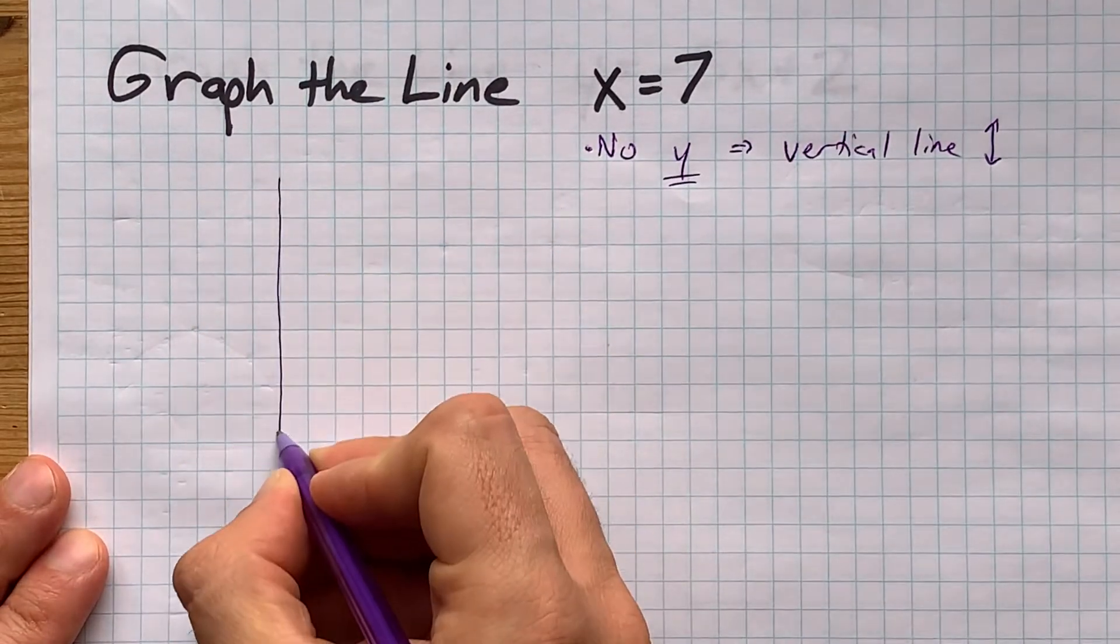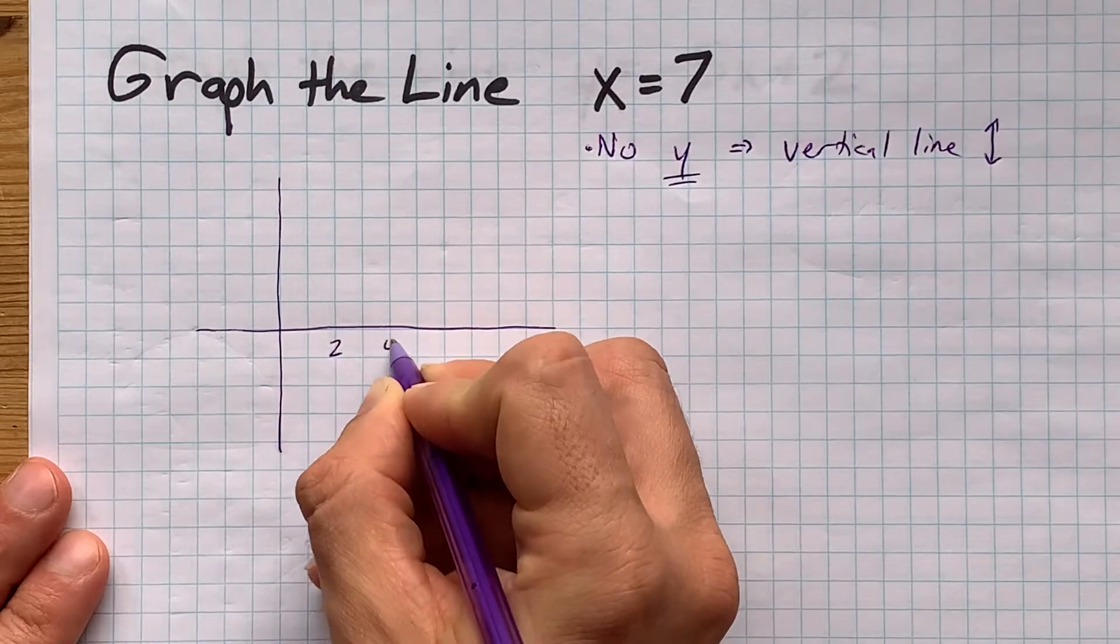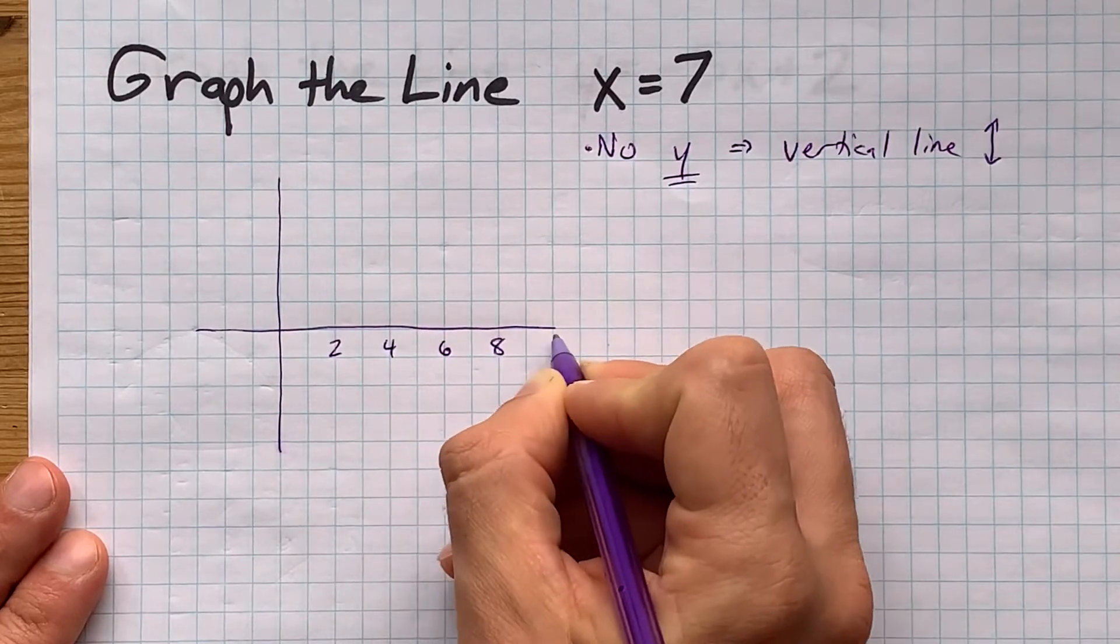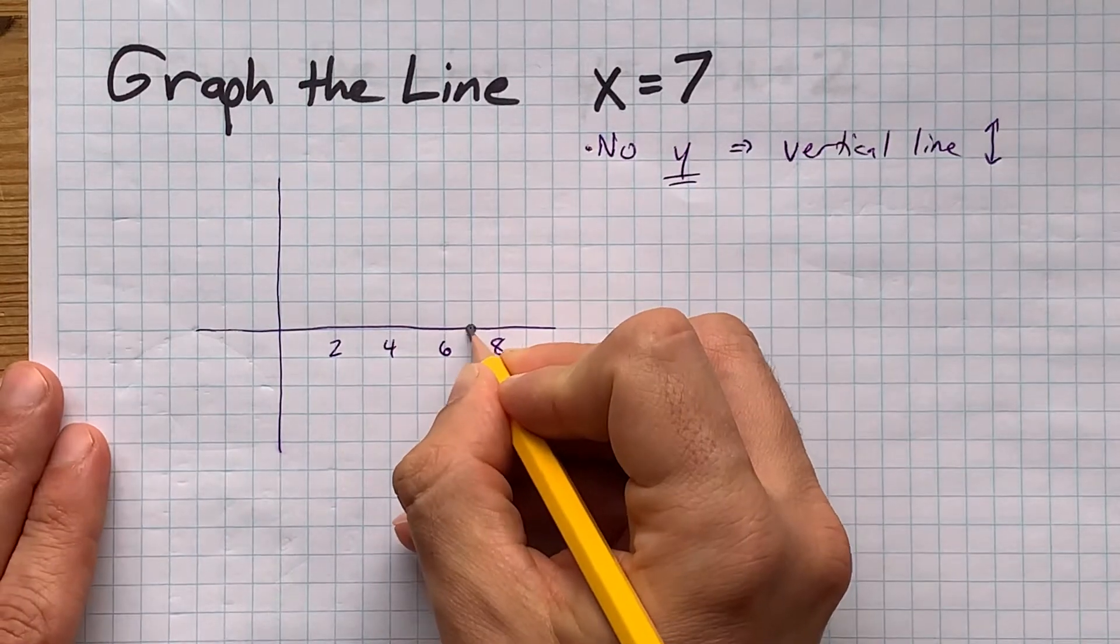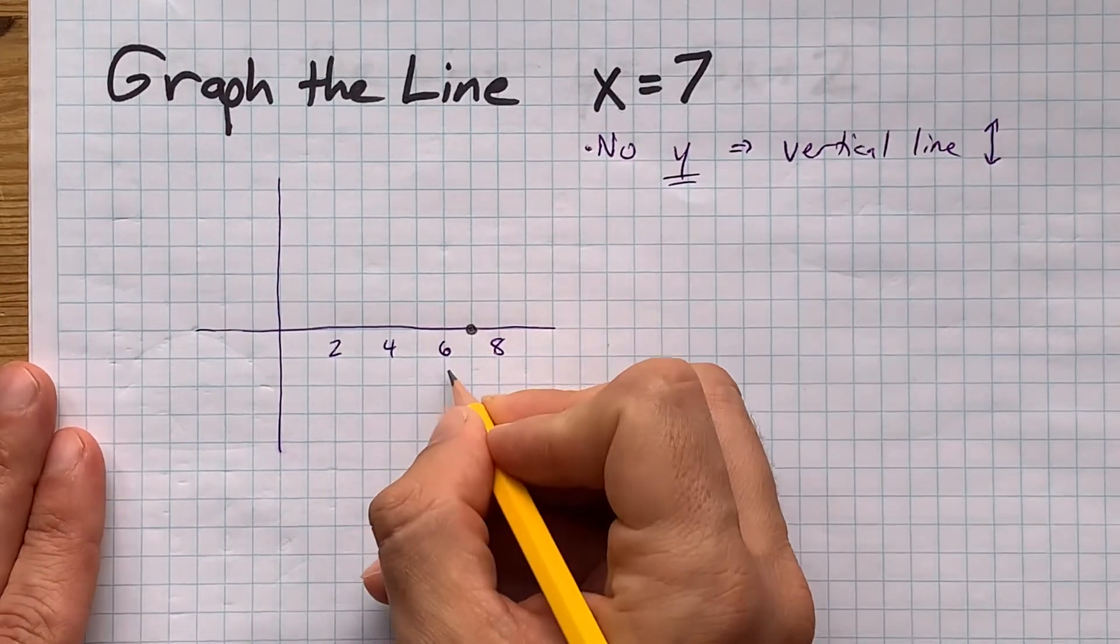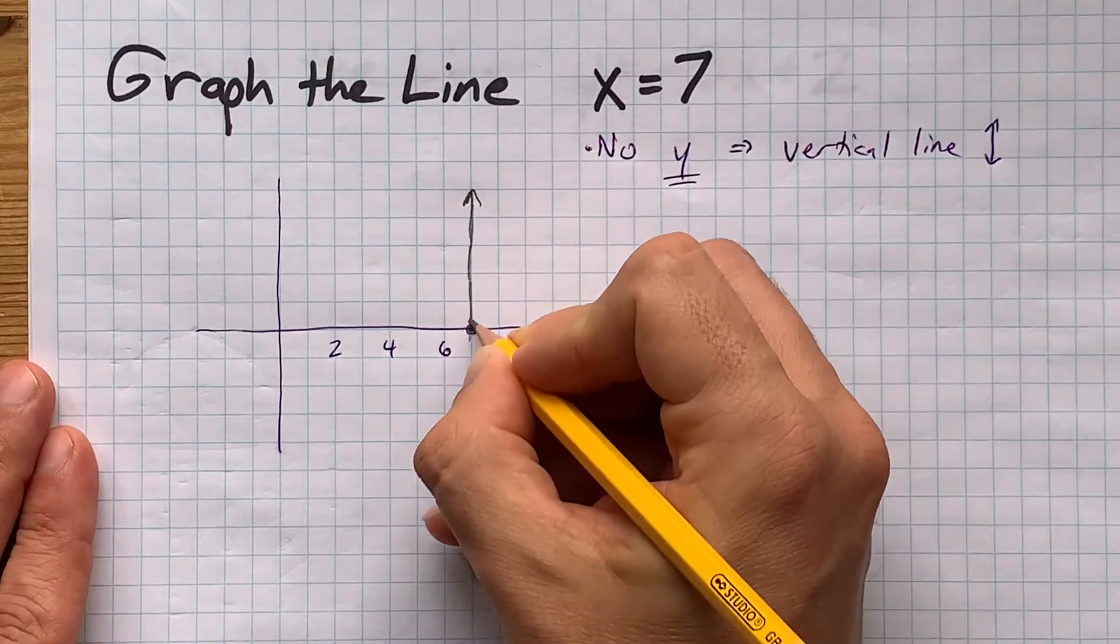What that means is draw your grid - you may already have it drawn for you. Label your x-axis with some numbers: here's 2, 4, 6, and 8. This line starts at x equals 7. Get it? 7 on the x-axis, and then it goes straight up and down from there.